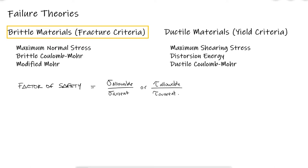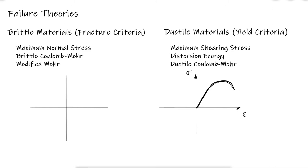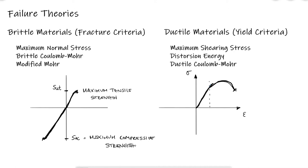Six videos ago, I showed you some stress-strain curves for brittle materials and ductile materials. We talked about the elastic section and the difference between engineering and true stresses and strains, but today we will focus on brittle materials. For that, we need to understand that most brittle materials have a maximum tensile strength that is different from the maximum compressive strength, although there are some exceptions. Usually, the maximum compressive strength is greater than the maximum tensile strength.